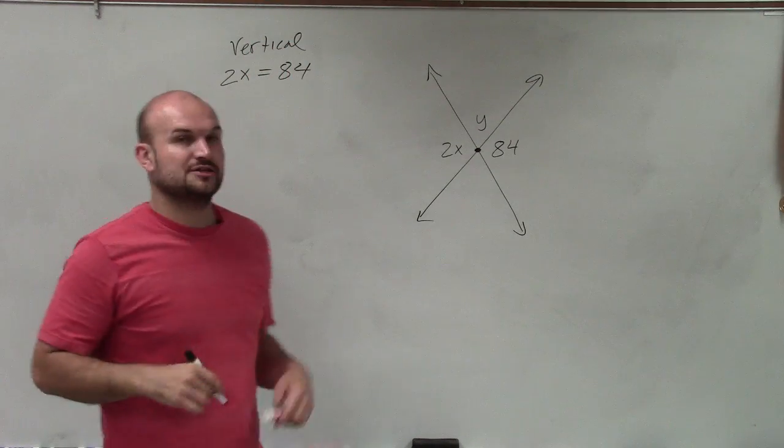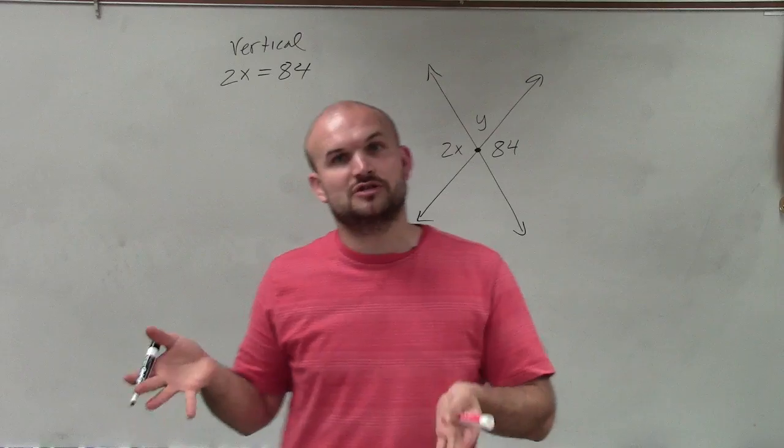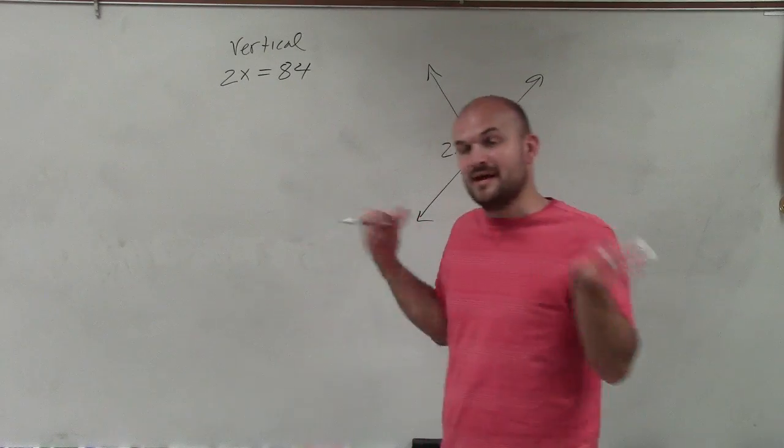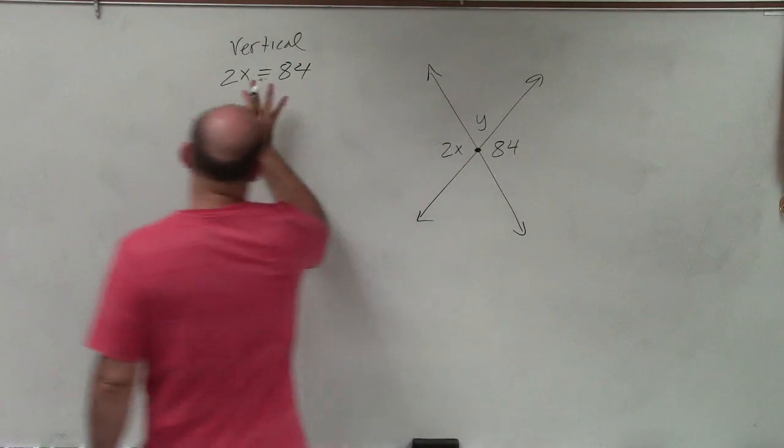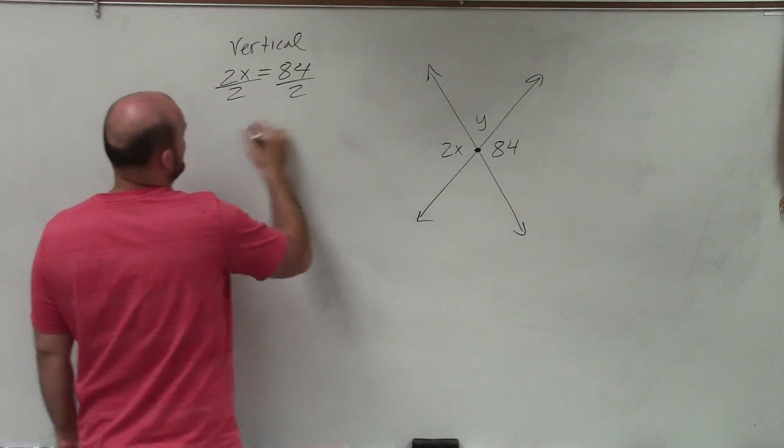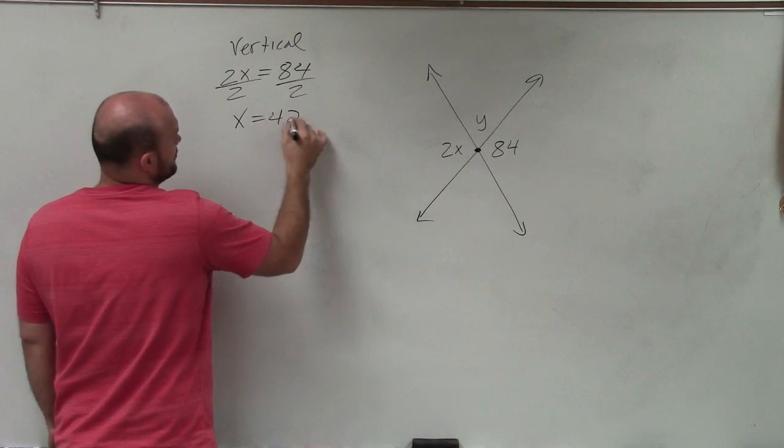So what I'm going to do is write the relationship, and I'm going to write vertical angles just to make sure that I have it correct. If I made a mistake, I know where I made it. But vertical angles are equal to each other, so I'll divide by 2, divide by 2, x equals 42.